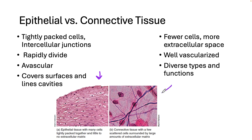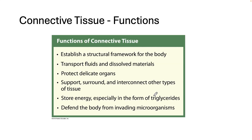Now look at this picture on the right. This is a generic connective tissue, and you can see the cells are all spread out with a lot more space between them. This type of tissue tends to be very well vascularized, so it has a good blood supply. There are a lot of diverse types and functions, which is good because we have lots of different things that can help our body out — holding things together and filling spaces. But it also means you have to learn a lot of different types. Connective tissue is the most abundant tissue by weight.